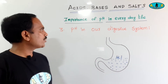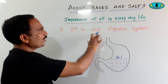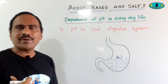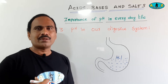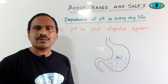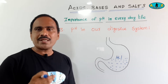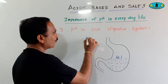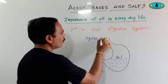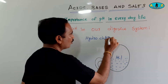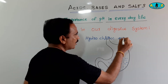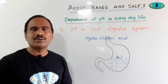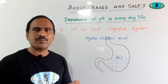Next use: pH in our digestive system. It is very interesting. In our digestive system, especially in the stomach, one acid is produced — that acid is hydrochloric acid, HCl. HCl is produced in our stomach and it helps to digest the food. This HCl does not normally cause any harm to the digestive system.